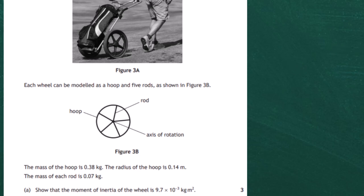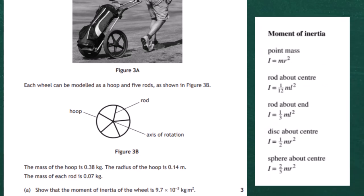To do this we have to break up that object into parts where we can easily calculate the moment of inertia. We can see we're going to have a hoop and we're going to have rods. Looking at the relationship sheet, the moment of inertia of a point mass at radius r from the center of rotation is I = mr². For the rod rotating about its end, the formula is I = (1/3)mL², and we've got five of those to work out.